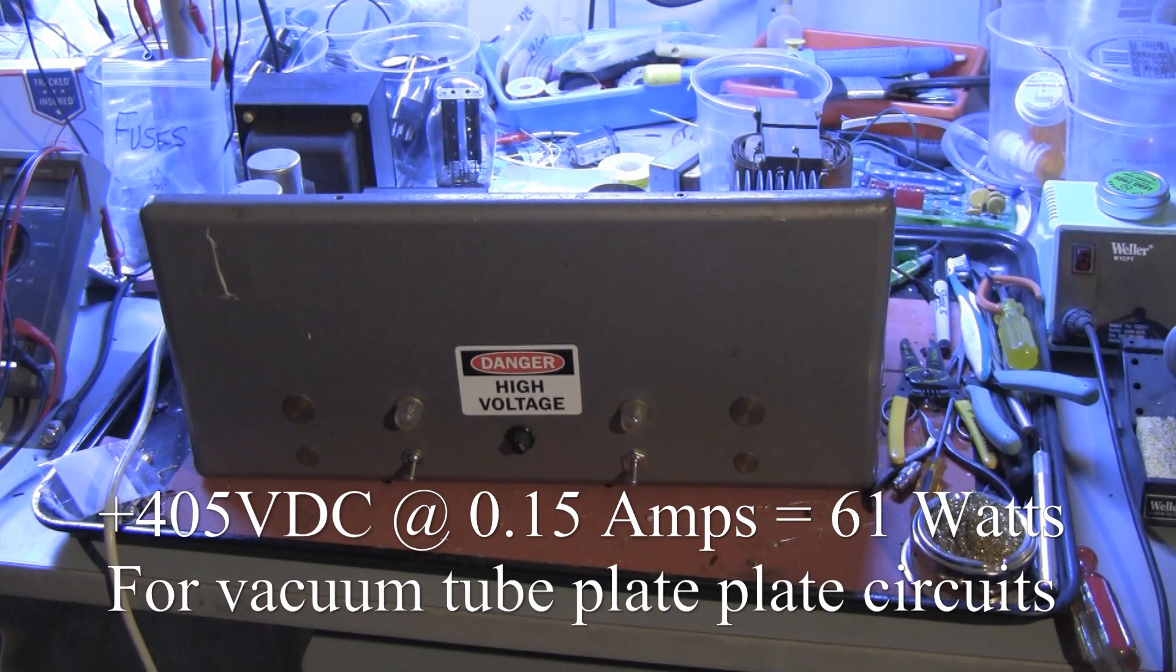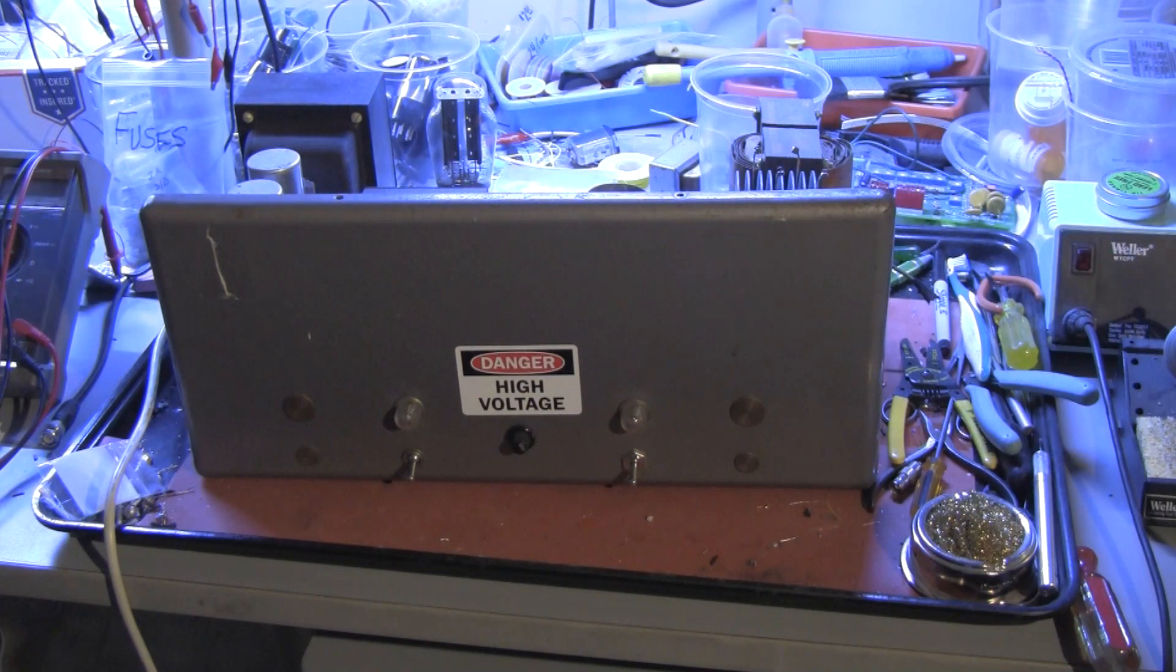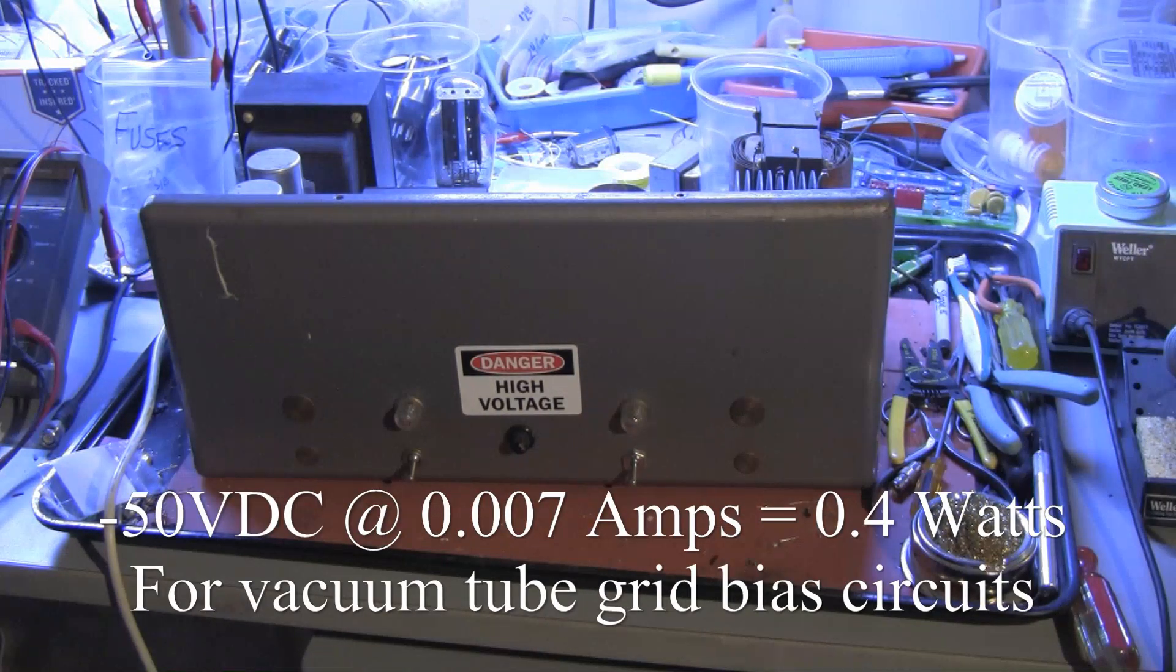The third output is called C-, and it's minus 50 volts DC at less than 10 milliamps, and in operation draws less than half a watt.